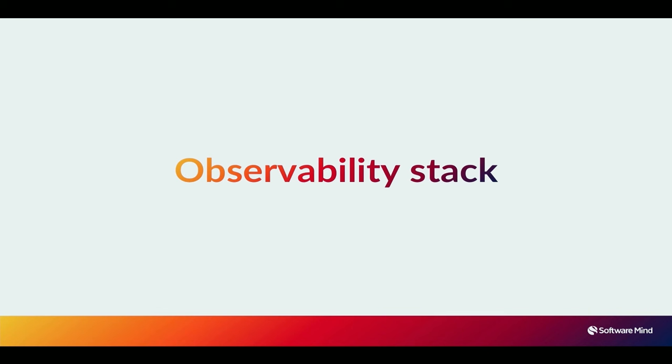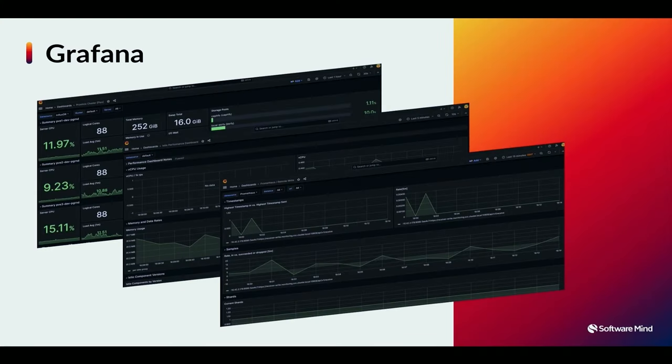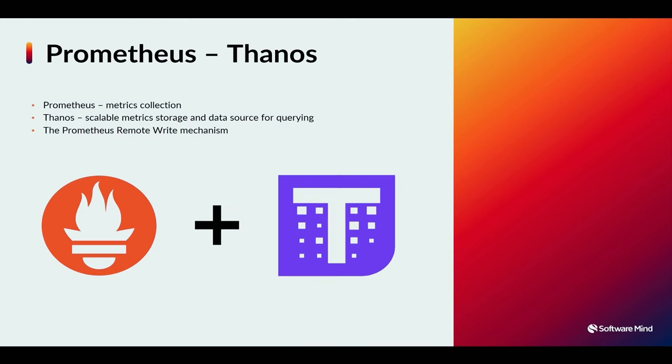Now let's move to the observability stack. When you think about observability, there are plenty of tools on the market that can do almost the same job. In SoftwareMind, we focus on open source projects. Today we're going to present a family of observability tools around Grafana — we stick to the Grafana stack mostly because it's well integrated within itself. We start with Grafana, which is used to visualize and gather data. Importantly, Grafana does not act as a data source — it only visualizes data from other components.